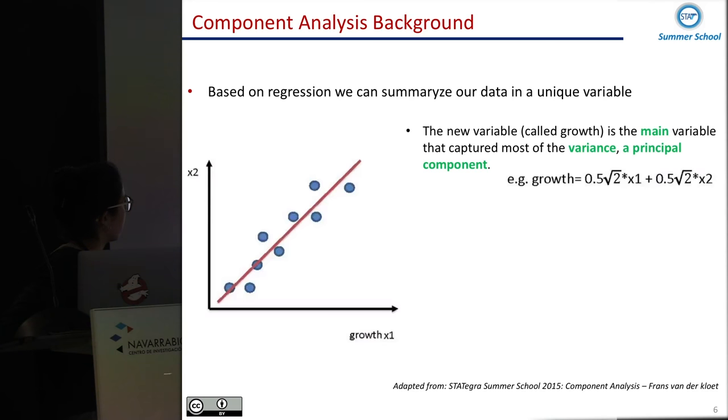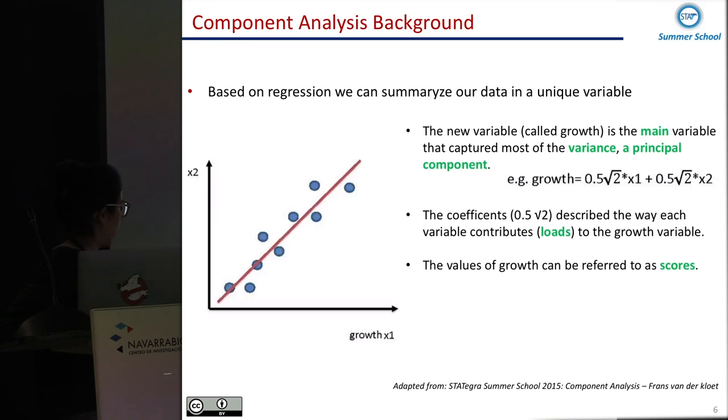So basically we have the growth, a coefficient for the first gene and another coefficient for the second gene. These coefficients we will know as a load. It's the contribution of each one of the variables in the new variable that we are defining. And the values of the new variable is what we know as scores.